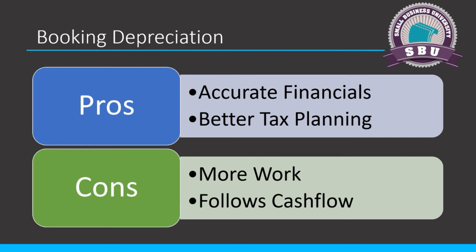Here's how Halon treats the depreciation you book: Halon actually ignores it — it looks for the account you call depreciation expense and ignores it. Because Halon calculates its own depreciation and uses its own number. So if your depreciation number is not perfect, or weird, or you forgot to do it for a quarter, you're not going to throw Halon off because Halon doesn't use it. Halon creates its own depreciation and plugs that into the financials. So do it how you want — don't fret over it.